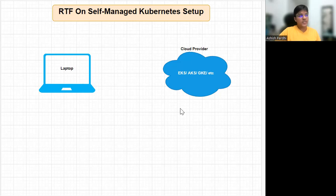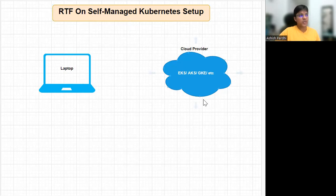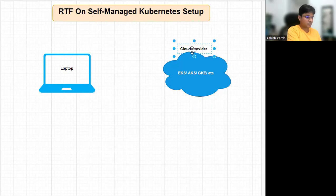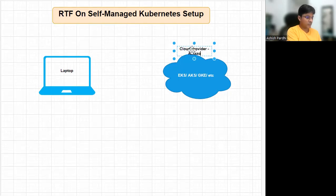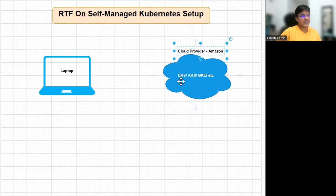So let's move on with the setup. When you're planning to have a setup which is RTF on self-managed Kubernetes, you need to buy and build the Kubernetes cluster. We'll decide our cloud provider is Amazon, so when we select Amazon, we'll be selecting EKS.